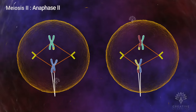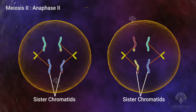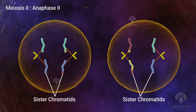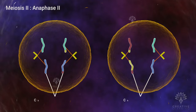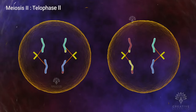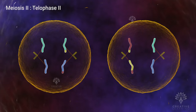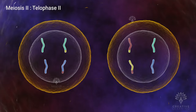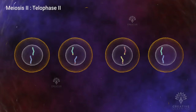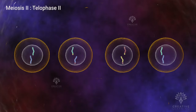During anaphase II, the sister chromatids of each chromosome separate and migrate to opposite poles. Once the sister chromatids separate, they are called chromosomes. Finally, in telophase II, the spindle fibers disappear, the nuclear membrane regenerates, and both cells undergo cytokinesis. Meiosis II ends with four genetically distinct haploid daughter cells, each containing only one set of chromosomes.